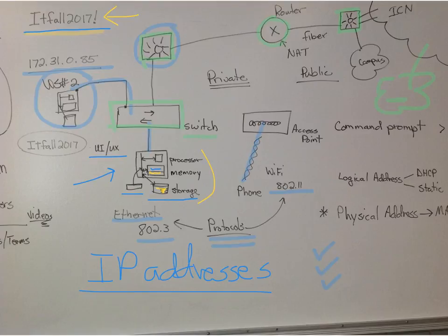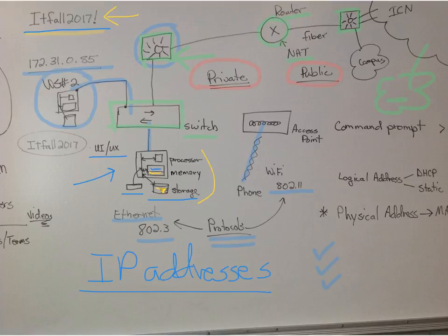This is a switch. This is a router up here — it's a multi-layered switch to be more technical, but this is actually a router. Network address translation happens there. We have private inside addresses that get converted to a public address on the outside. We'll talk more about that on Wednesday.